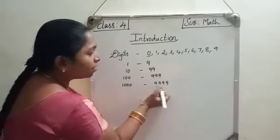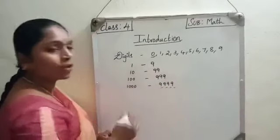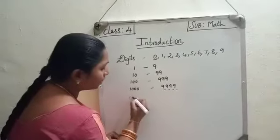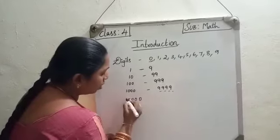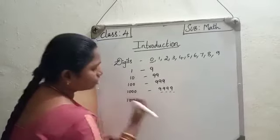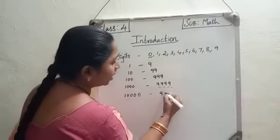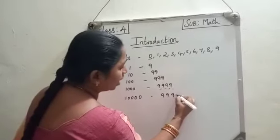When we move to a 5-digit number, the smallest is 10,000 and the biggest will obviously be 99,999.